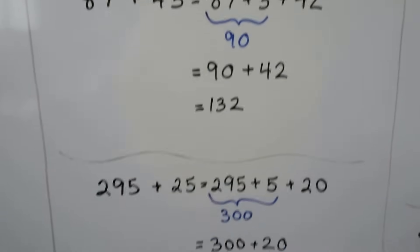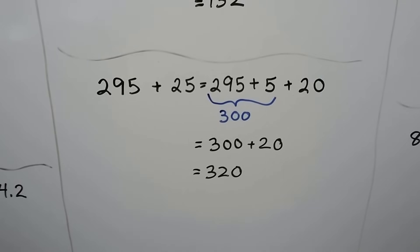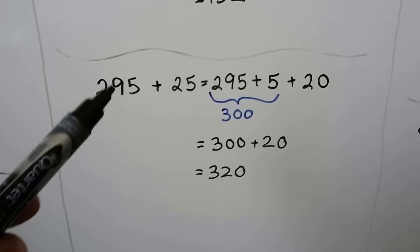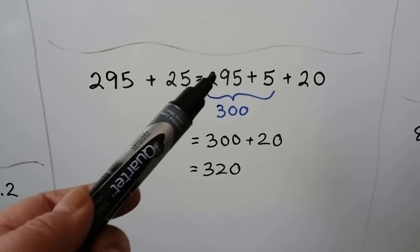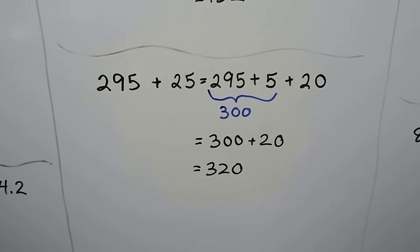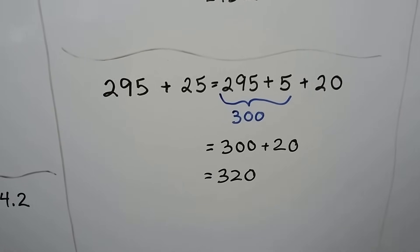Let's try another one. Here we have 295 plus 25. This only needs 5 more to become 300. So we can take the 5 away from the 25, give it to the 295, and then add mentally 300 plus 20. 320.